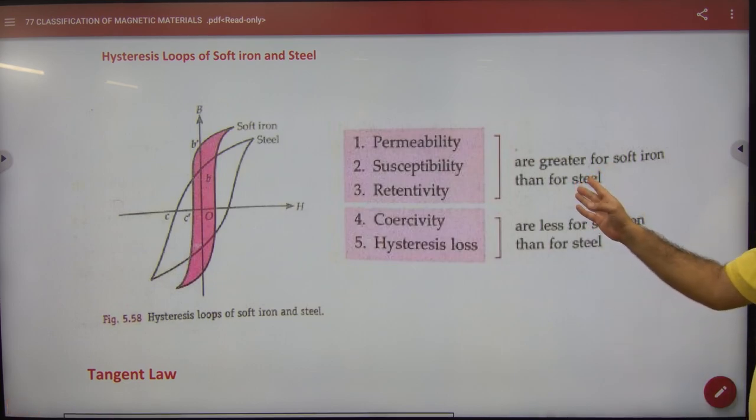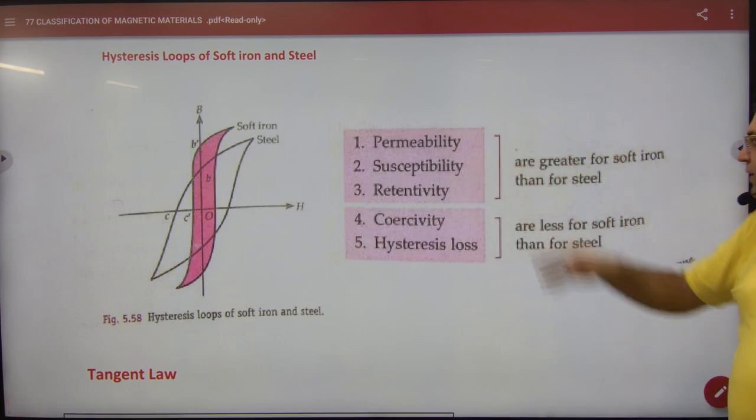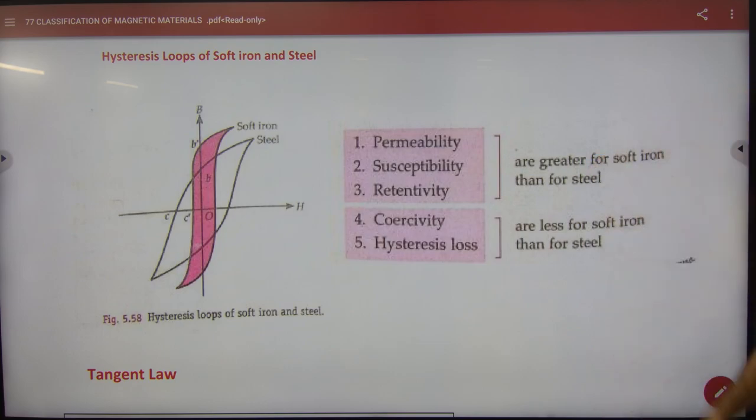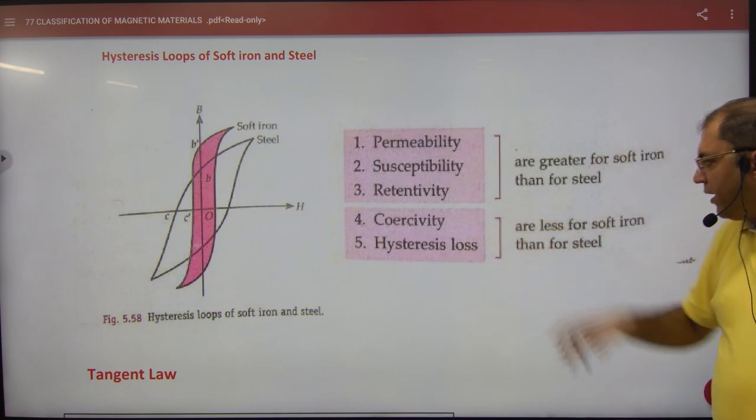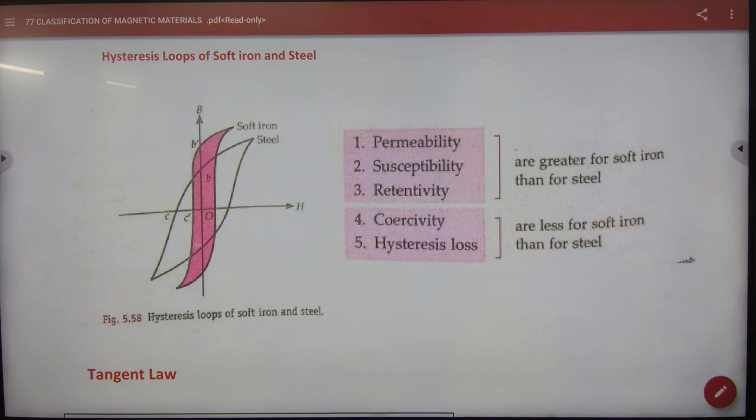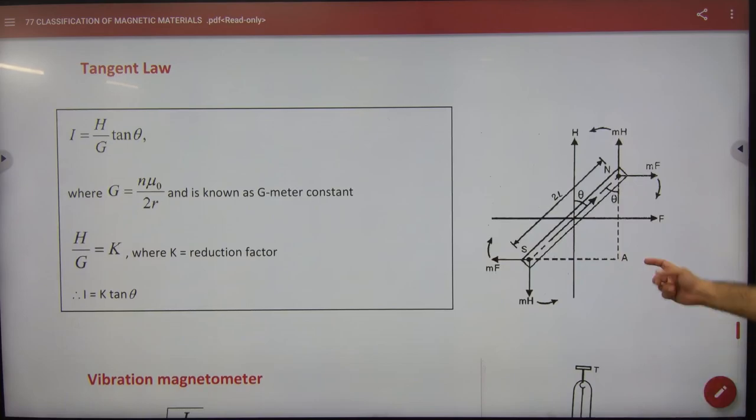In hysteresis, permeability, susceptibility, retentivity are greater for soft iron. Coercivity, hysteresis loss are less for soft iron. So which factors? Which amount of soft iron? This is written. Just.